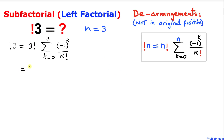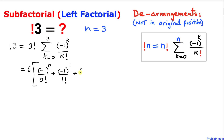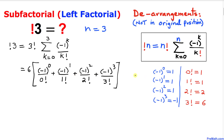So we have six times, expanding the sigma sum from k equals zero to three: negative one to the power zero divided by zero factorial, plus negative one to the power one divided by one factorial, plus negative one to the power two over two factorial, plus negative one to the power three divided by three factorial. We stop at three.